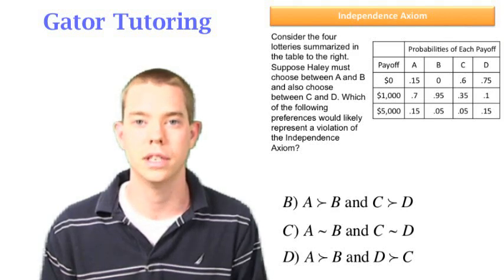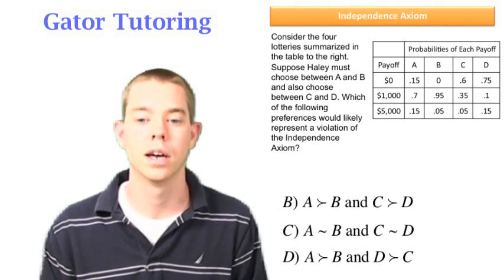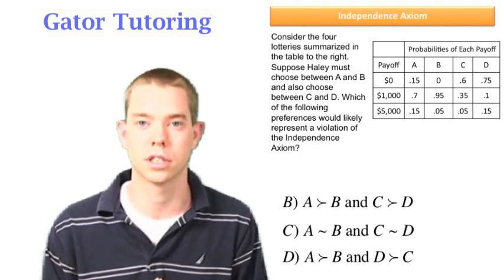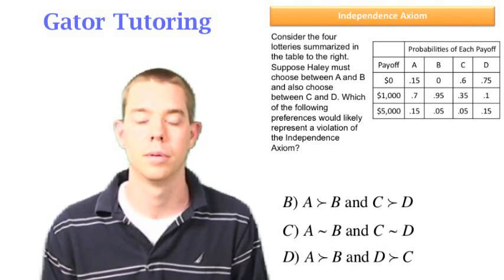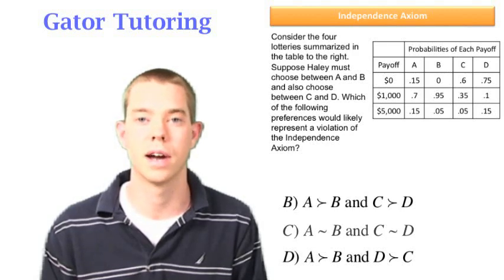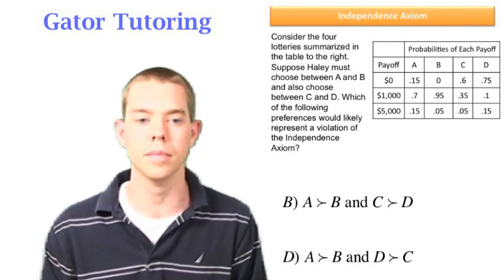Let's look at option choice C. It says that we're indifferent between A and B, and we're also indifferent between C and D. And like we said, this is also consistent with our expected utility model. So we can get rid of that. That is not a violation of the independence axiom.